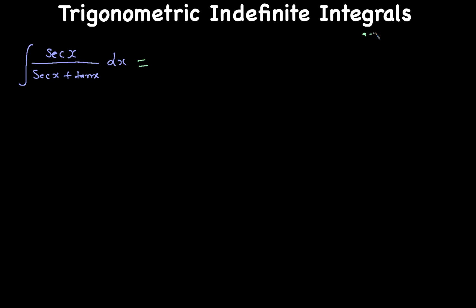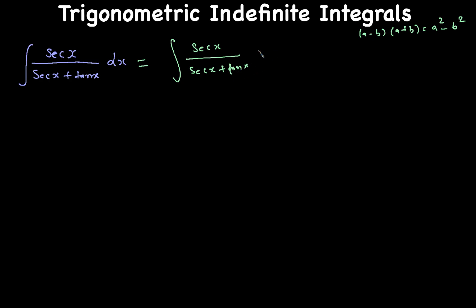I'm going to use the formula a minus b times a plus b equals a squared minus b squared. I already have a plus b in the denominator, so I want to multiply by a minus b. My a is secant x and b is tangent x. I'll use the conjugate: secant x divided by (secant x plus tangent x), multiplied and divided by (secant x minus tangent x).